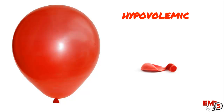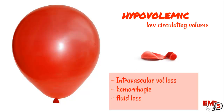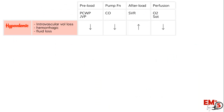The first is hypovolemic shock. This is the one we think about a lot in the ER. This can be from hemorrhage, maybe from a trauma, vaginal bleeding, or just general fluid losses or being intravascularly dry — maybe vomiting a lot, GI losses, just a low circulating volume. That basically means that your preload to start with is low, and that's going to affect everything else. Your pump function is going to be low, so you might have a response to increase your SVR afterload, and your perfusion in general is going to be down.